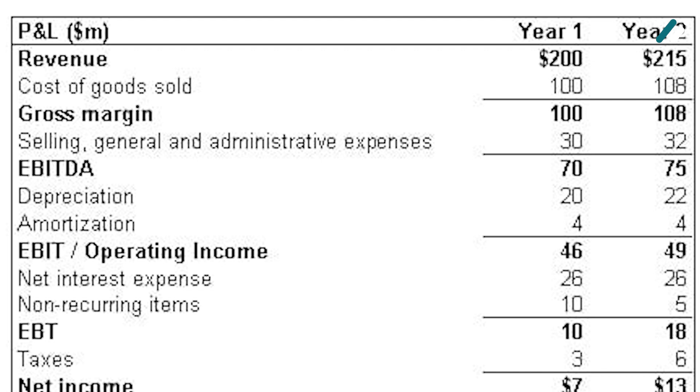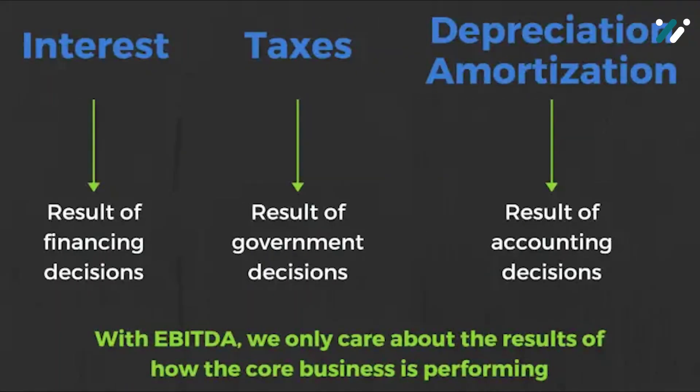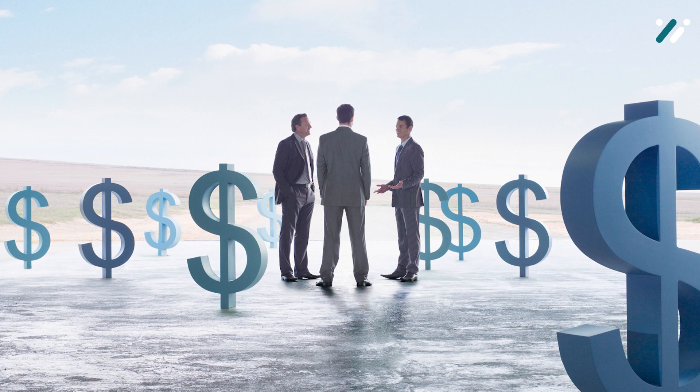In conclusion, EBITDA is a powerful metric for assessing a company's operational profitability by focusing on core business activities. However, it's crucial to consider its limitations and use it in conjunction with other financial metrics for a comprehensive analysis. Understanding EBITDA can empower financial analysts, investors, and business leaders to make informed decisions based on a company's true operational performance. Thank you for joining today's lecture on EBITDA. If you have any questions, feel free to ask.